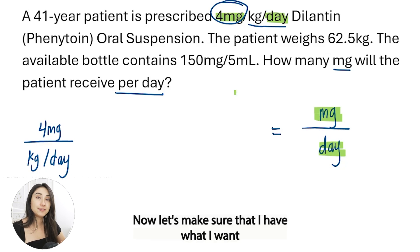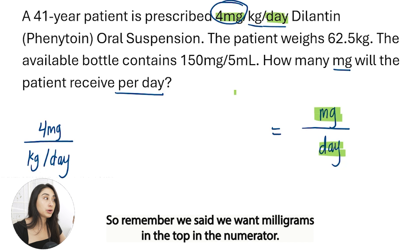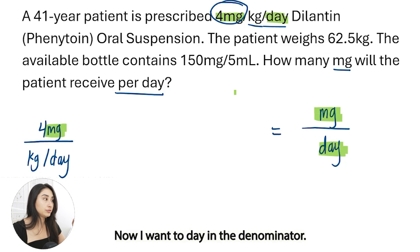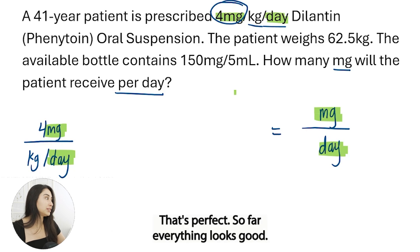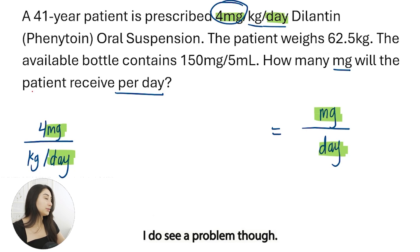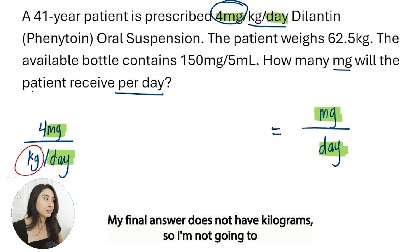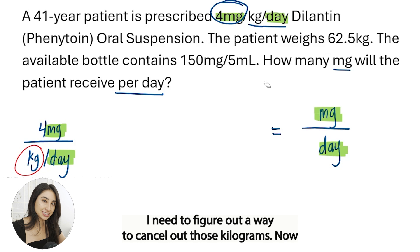Now let's make sure that I have what I want in the numerator and what I want in the denominator. We said we want milligrams in the numerator — yes, I've got milligrams, perfect. I want day in the denominator, and I also have day in the denominator — perfect. So far everything looks good. I do see a problem though: I have kilograms in the denominator. I don't want kilograms. My final answer does not have kilograms, so I'm not going to leave kilograms in there. I need to figure out a way to cancel out those kilograms.